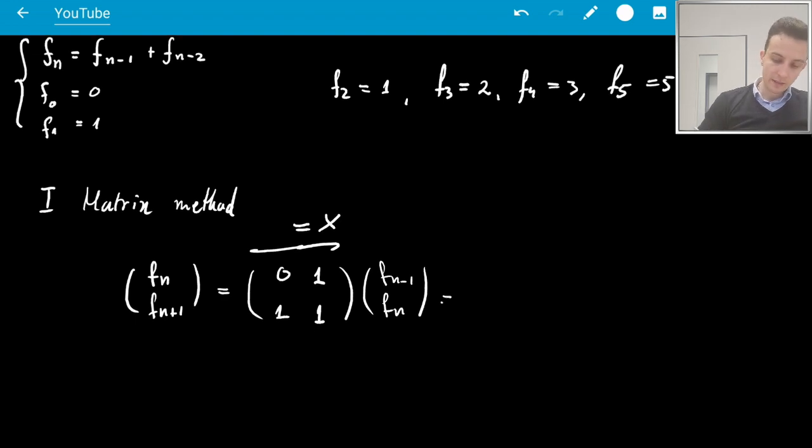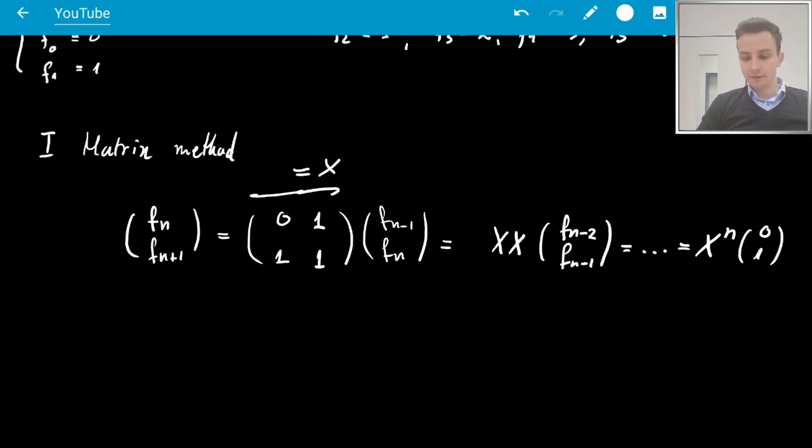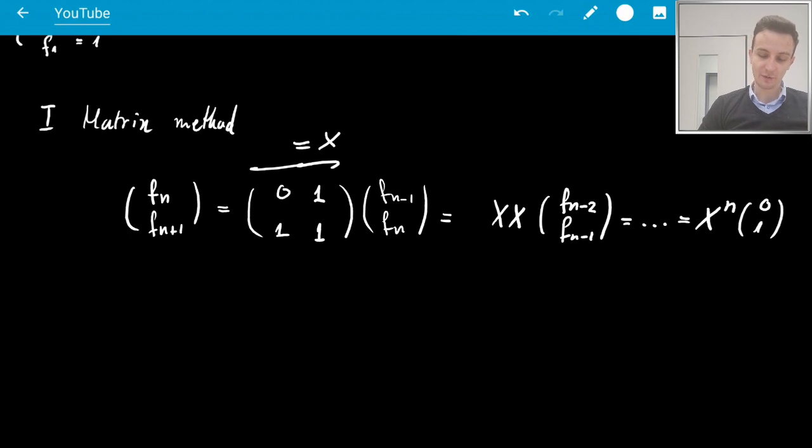And I can see that I can keep doing this. So recursively I'm going to get x times x times Fn minus 2 Fn minus 1 and so on and actually x to the nth power times the vector 0, 1. Okay, this is nice. So now all that will remain is to calculate x to the n. And then I will get Fn or Fn plus 1 via very easy multiplication, right? Just 0 and 1.